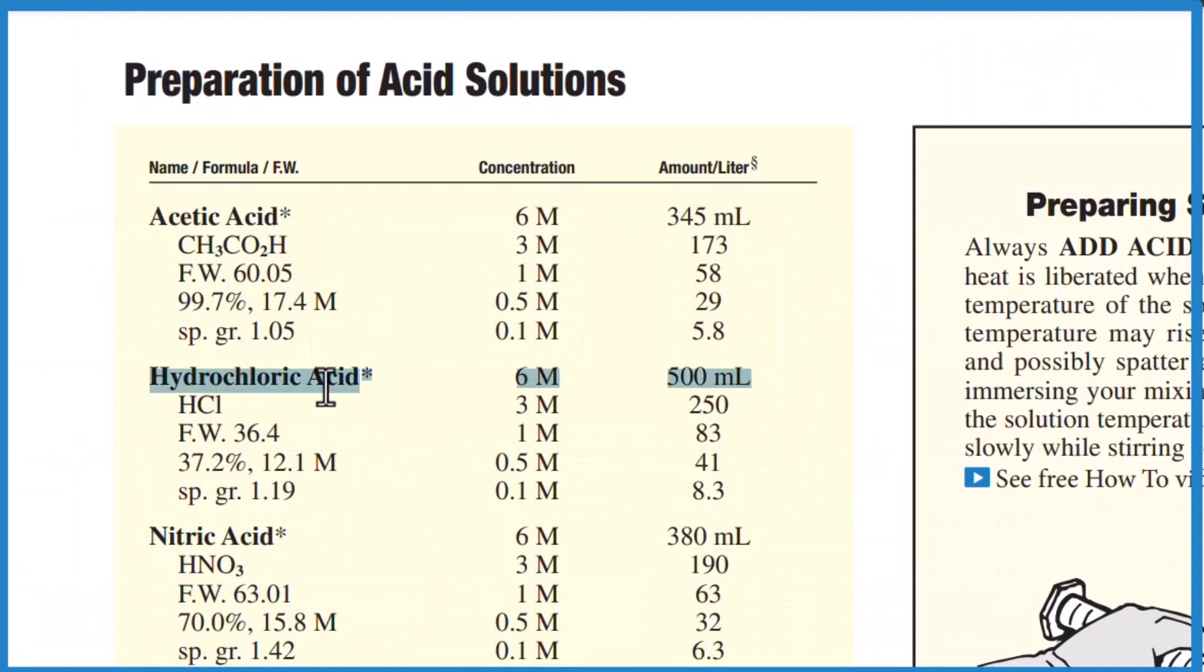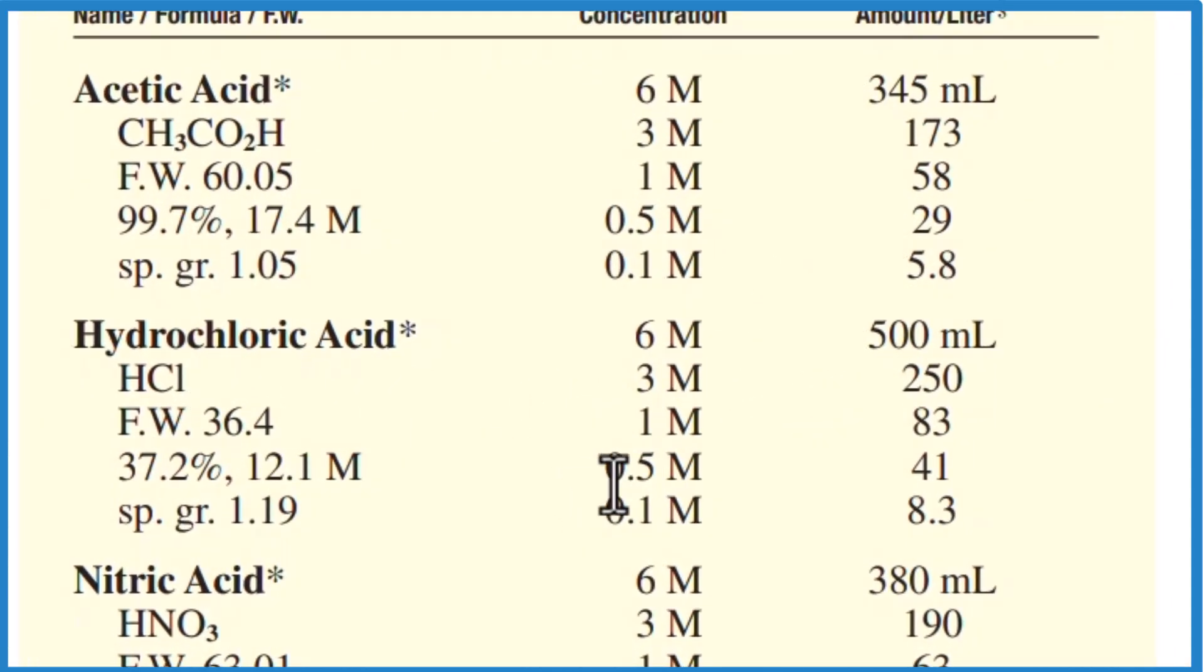So we have hydrochloric acid right here, and we wanted to make a 0.5 molar solution. We would need 41 milliliters in one liter to give us this 0.5 molar solution of hydrochloric acid.